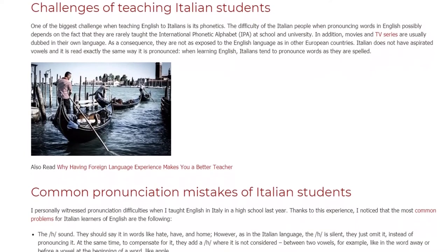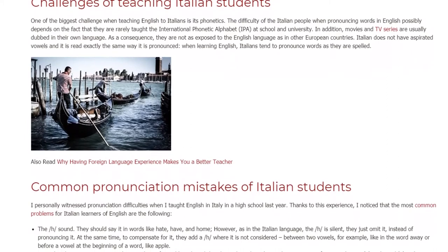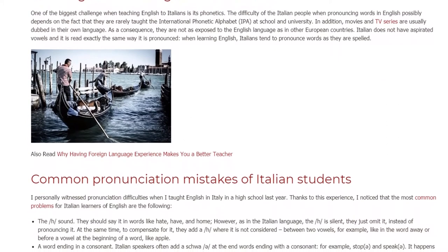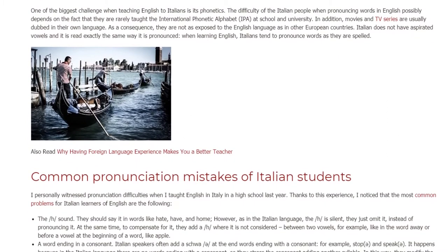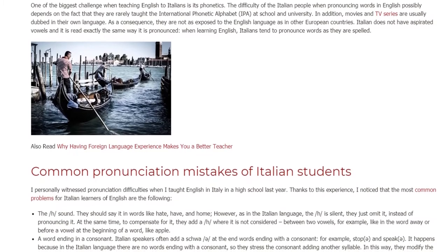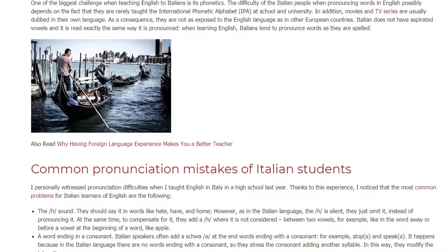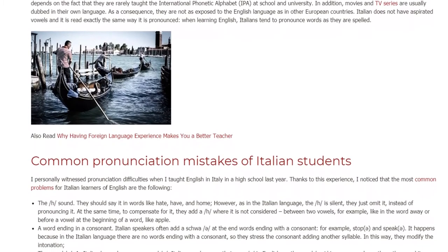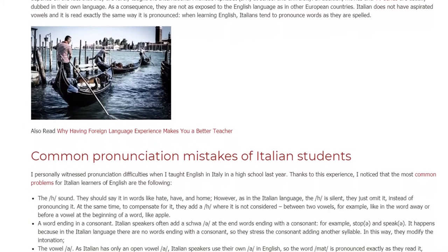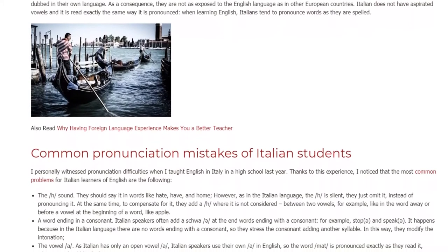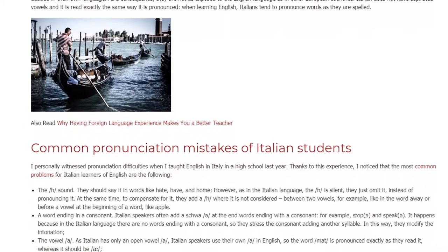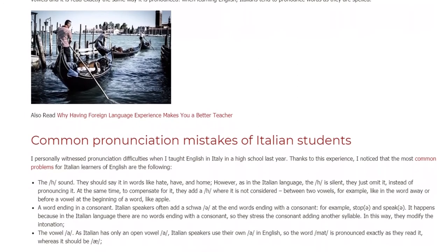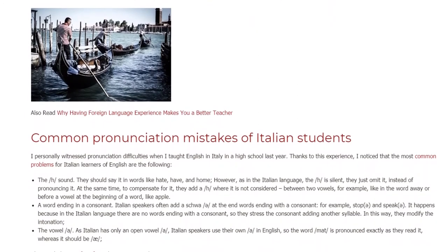Italians should pronounce the H in words like 'hate,' 'have,' and 'home.' However, as in the Italian language the H is silent, they just omit it instead of pronouncing it. At the same time, to compensate for it, they add an H where it is not needed — between two vowels, for example in the word 'away,' or before a vowel at the beginning of a word, like 'apple.'